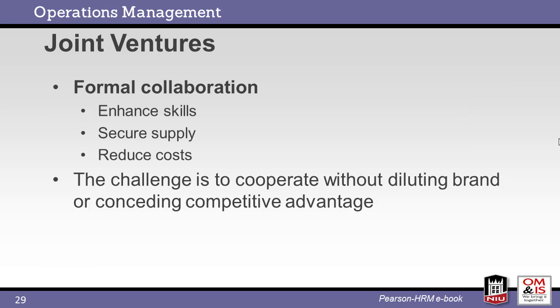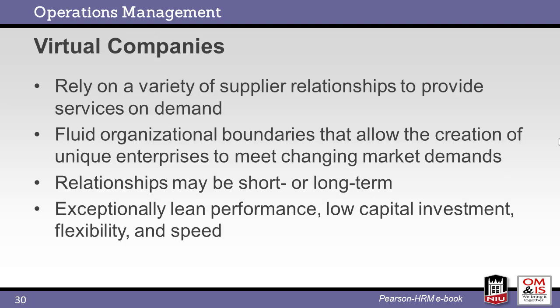One method of integrating companies within the supply chain is through joint ventures. A joint venture is a cooperative enterprise entered by two or more businesses for specific projects or other business activity. With joint ventures, both companies retain their individual identity. The goal is to leverage the strengths of the partners to reduce costs and enhance capability. A virtual company is a collection of organizations within the supply chain that form a loose confederation, enabling quick response to changing business conditions with lean performance, low investment, flexibility, and speed.